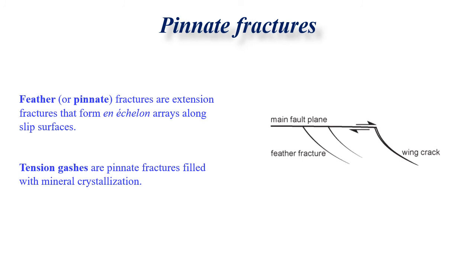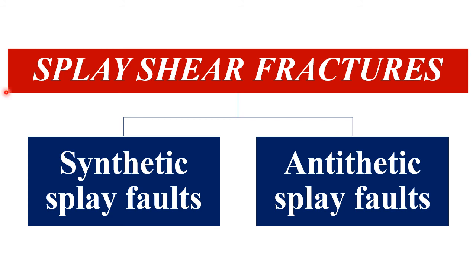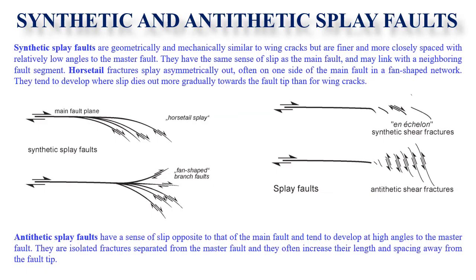Pinnate or feather fractures are extensional fractures that form en-échelon arrays along the slip surface. Tension gashes are pinnate fractures filled with crystallization products. Splay fractures are categorized into synthetic and antithetic types. Synthetic splay faults are geometrically and mechanically similar to wing cracks but are finer and more closely spaced, with relatively low angles to the master fault and the same sense of slip. They may link with neighboring fault segments.